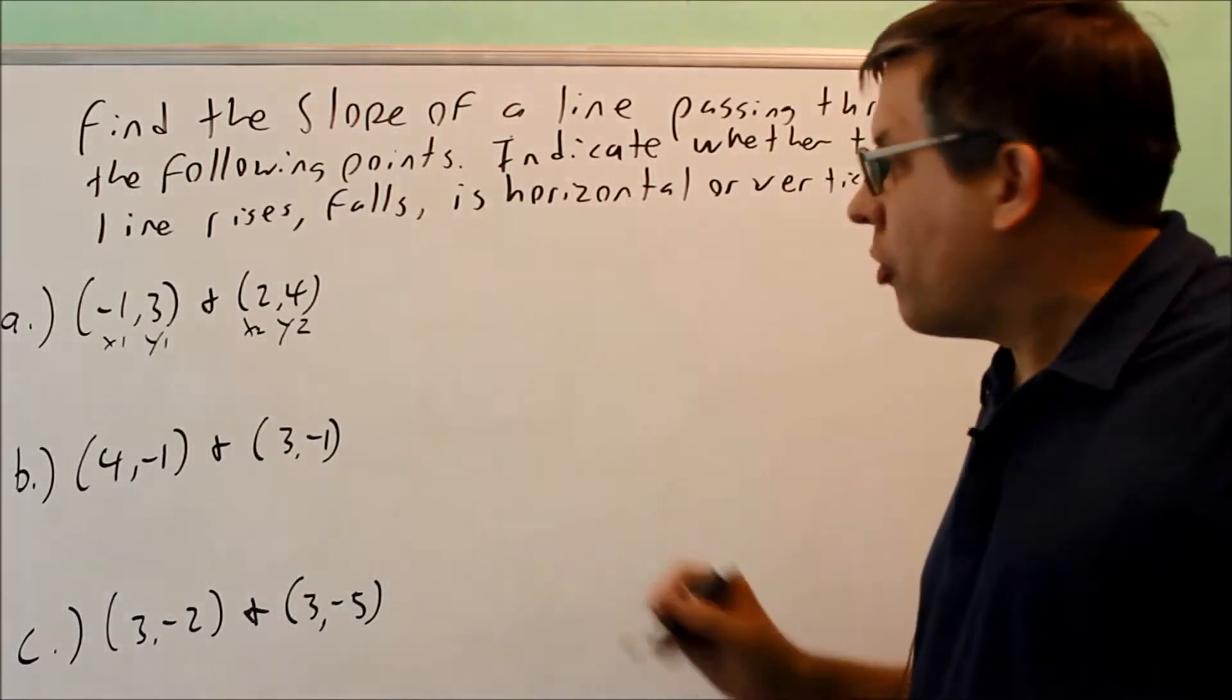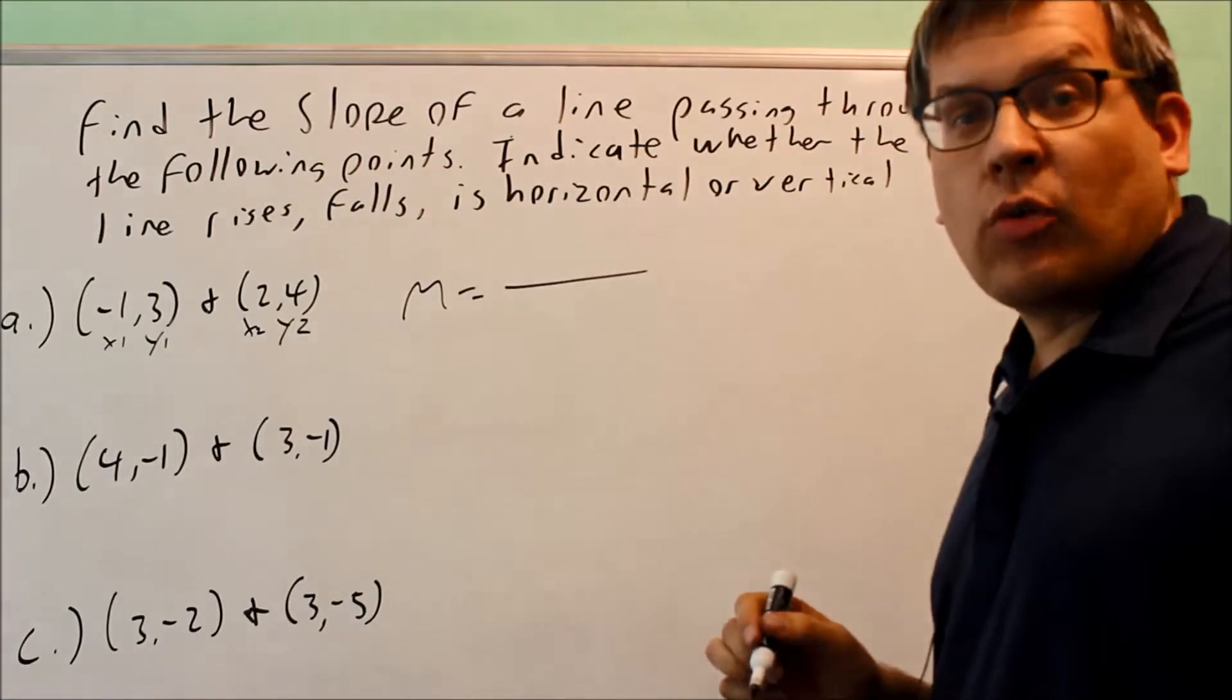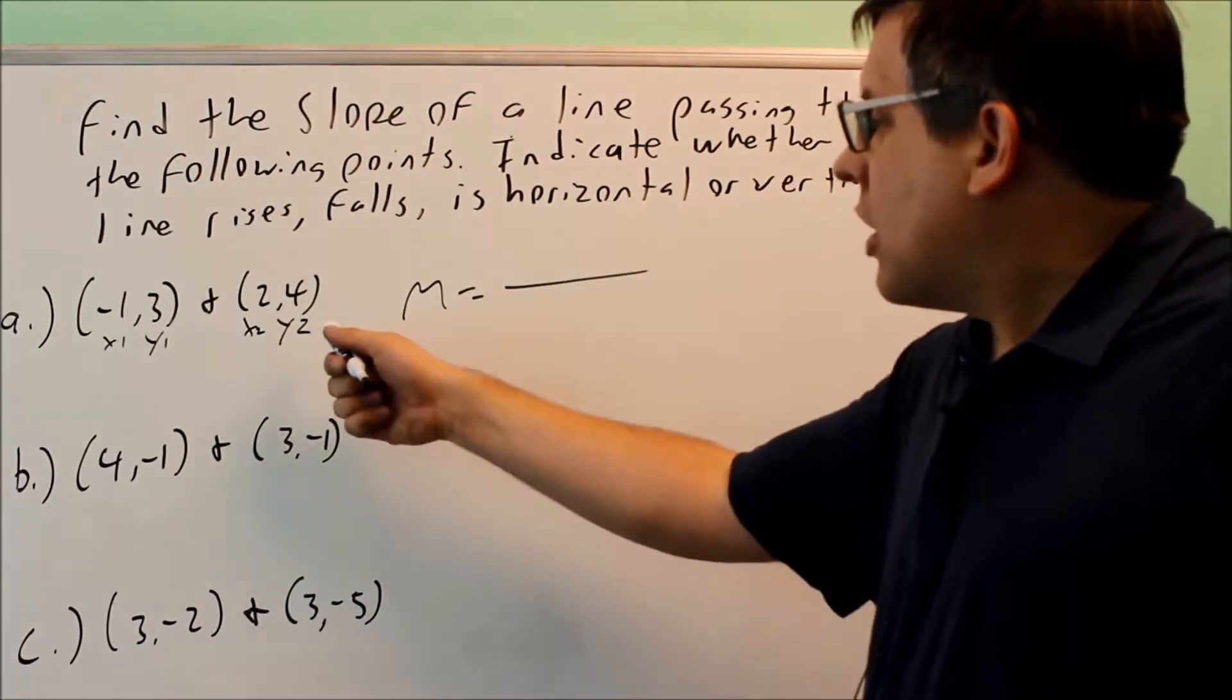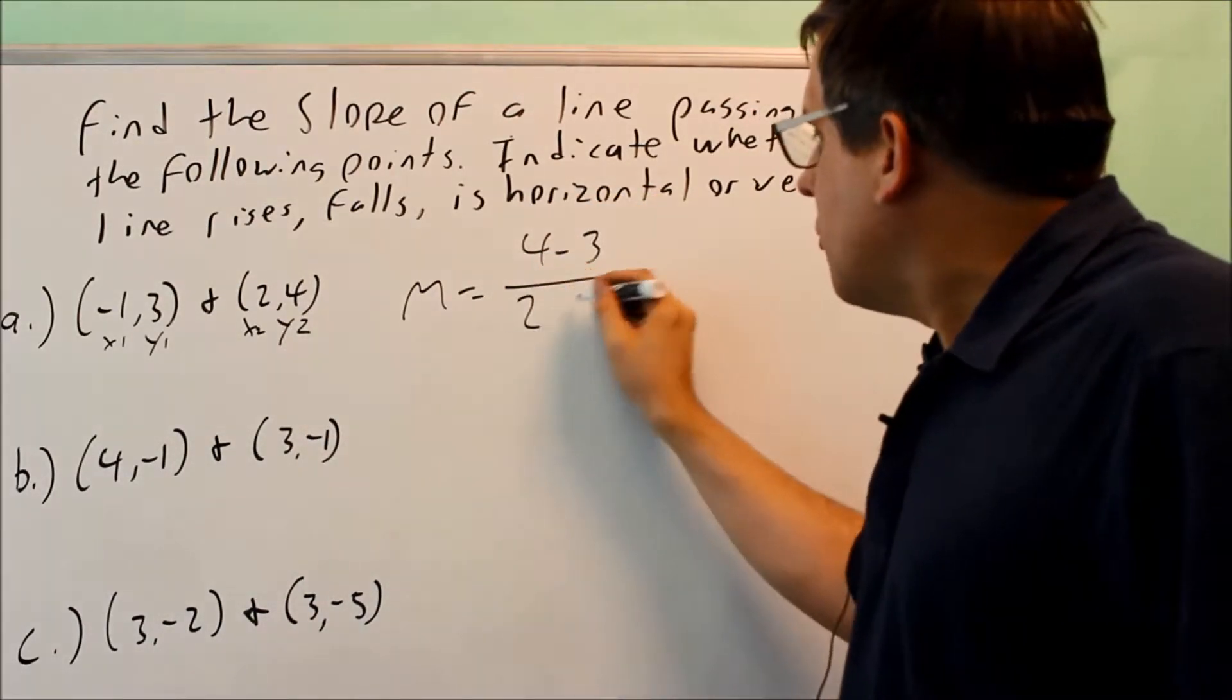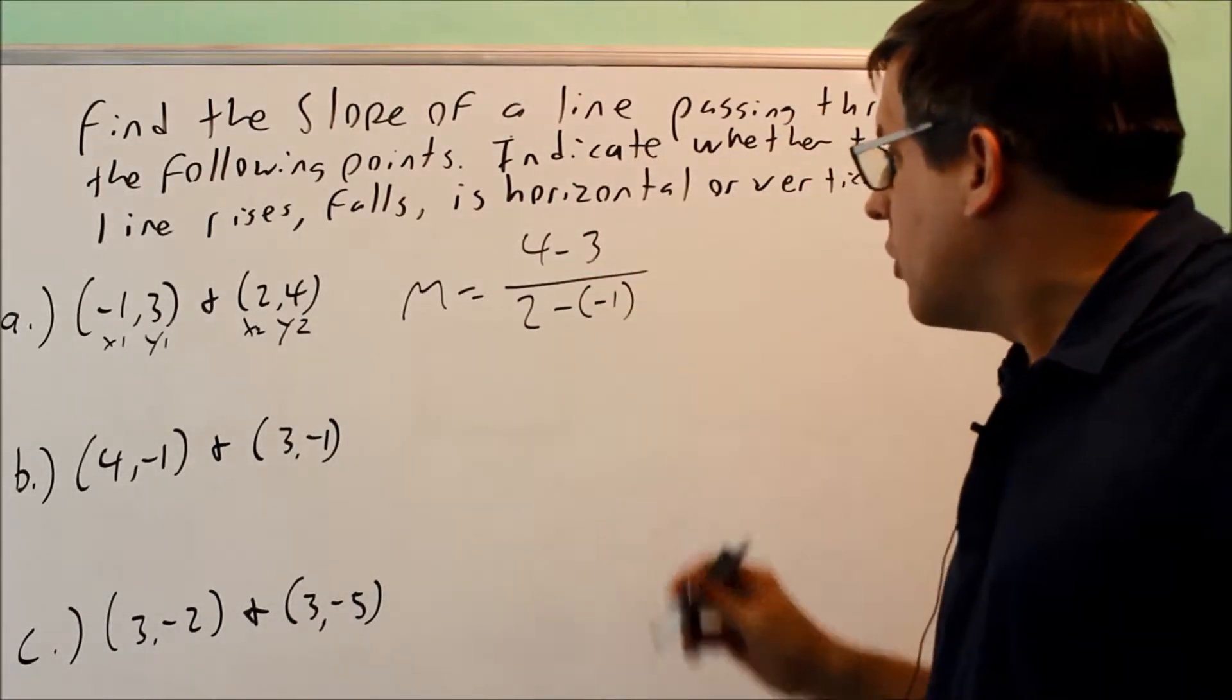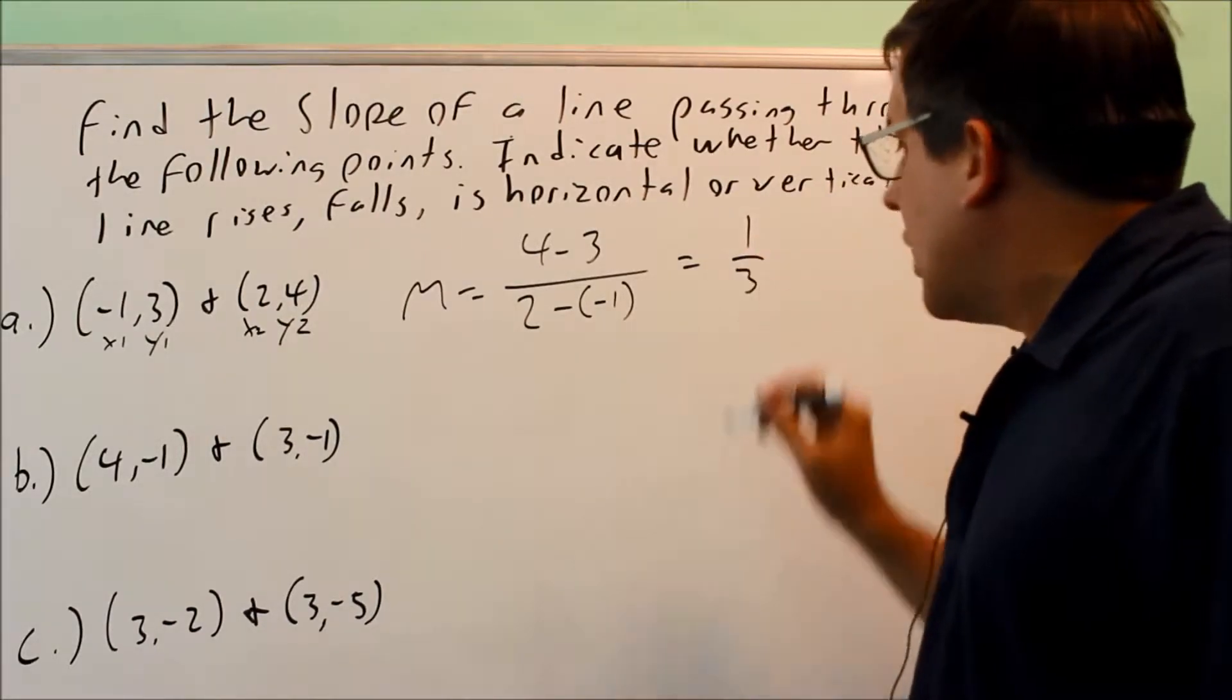I'm going to put them into the slope formula. So I have m equals y2 minus y1 over x2 minus x1. That's the formula we're using. So I have y2 minus y1. That's 4 minus 3. And then for the other one, I have 2 minus negative 1. Be careful with your negatives there. We have a double negative. That's going to give you 1 on top, and the bottom, it's going to give you 3.